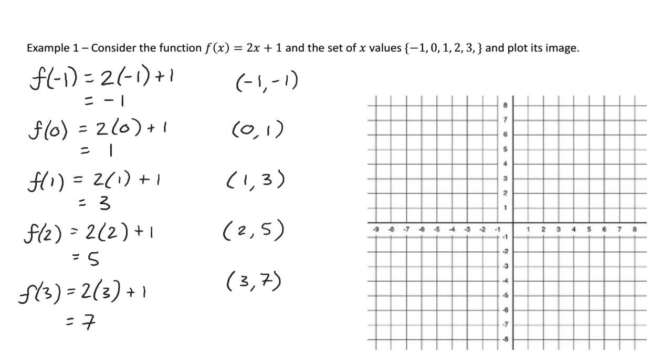So now what I'm going to do is I'm going to plot these points on this set of axes that I've got. So I've got negative 1, negative 1, and 0, 1, x-axis, and then y-axis, 1, 3, 2, 5, and 3, 7. And you should realize then it is a straight line. Not a very well drawn straight line, but it's a straight line. When I connect the dots up, it is a straight line.